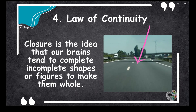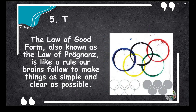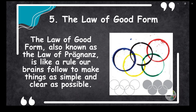Number five: the law of good form, also known as the law of Prägnanz. This is a rule our brains follow to make things as simple and clear as possible. For example, when you look at the Olympic rings, your brain automatically arranges them neatly in a simple, organized way — balanced and symmetrical — forming a clear pattern that's easier to understand and remember.